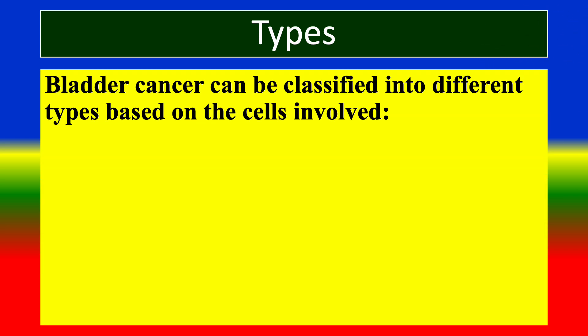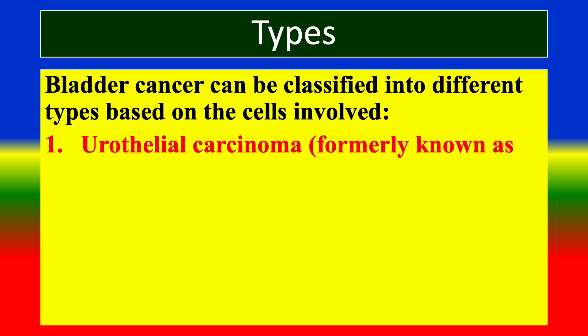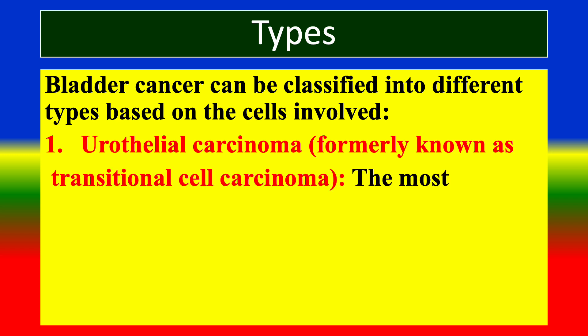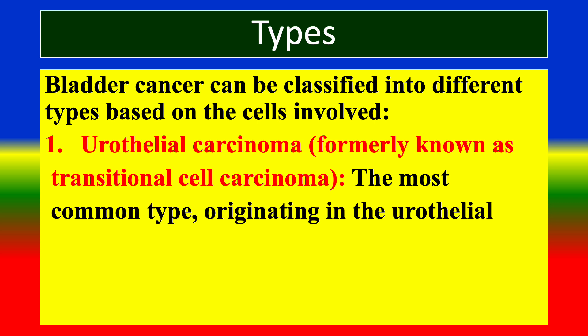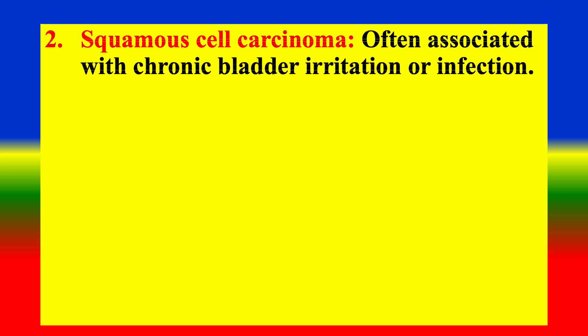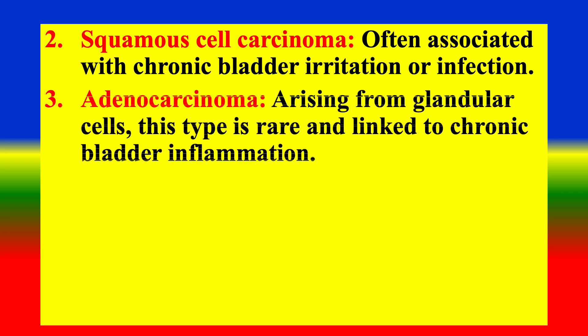Types: Bladder cancer can be classified into different types based on the cell involved. 1. Urothelial carcinoma, formerly known as transitional cell carcinoma — the most common type, originating in the urothelial cells lining the bladder. 2. Squamous cell carcinoma, often associated with chronic bladder irritation or infection. 3. Adenocarcinoma, arising from glandular cells — rare and linked to chronic bladder inflammation.